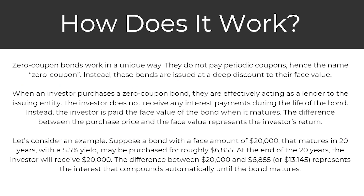So how does that actually work? They work in a unique way — they do not pay periodic coupons, hence the name zero coupon. Instead, these bonds are issued at a deep discount to their face value. Let's consider an example. Suppose a bond with a face amount of $20,000 that matures in 20 years with a 5.5% yield may be purchased for roughly $6,855. At the end of 20 years, the investor will receive $20,000. The difference between $20,000 and $6,855 — or $13,145 — represents interest that compounds automatically until the bond matures.